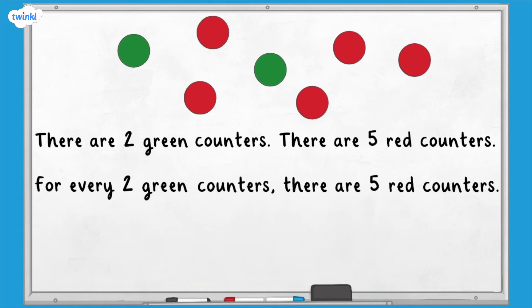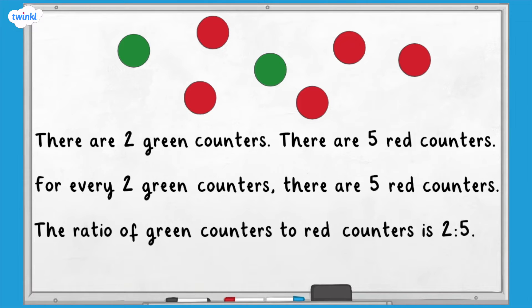For every two green counters, there are five red counters. So we can see that the ratio of green counters to red counters is two to five. We use the ratio symbol, which is a colon, to show this.